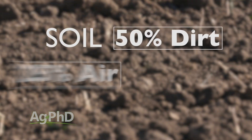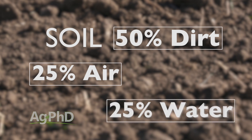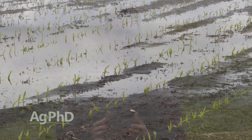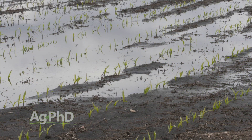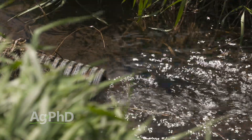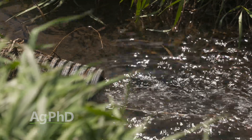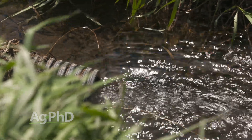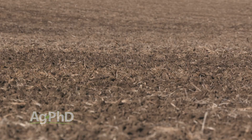Soils 101 tells you that you need 50% dirt, 25% air, and 25% water. Coming from a drier part of the country, we're always concerned about having enough water, but you can certainly have too much. When soils are saturated, it forces the air out of the soil. What it really comes down to is water table management — we want lots of water in the soil, but we also need that air in the soil.